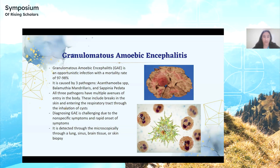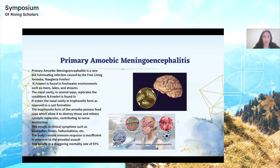There are several avenues of entry for these three pathogens in the human body, including the nasal cavity, breaks in the skin, or the respiratory tract. My second indication is Primary Amoebic Meningoencephalitis, or PAM. Unlike GAE, it is caused by one single pathogen, Naegleria fowleri, and it has one avenue of entry into the human body — through the nasal cavity. It enters the body in its trophozoite form, which is an active feeding state.